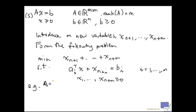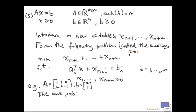So, let's look at an example. Suppose that a is 1, 1, 0, 2, 0, minus 1. And b is, say, 2, 1. Then, the auxiliary problem. So, this is called the auxiliary problem of s.